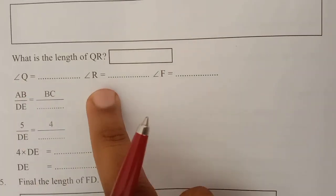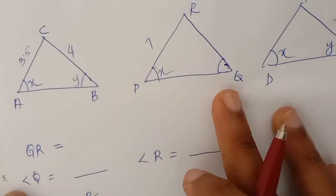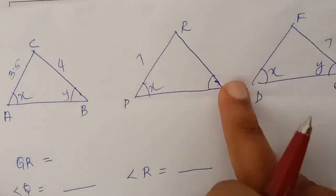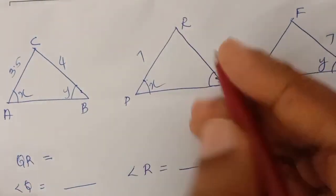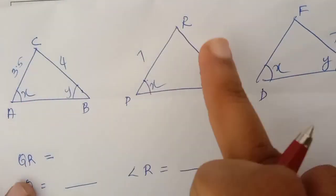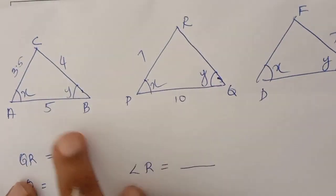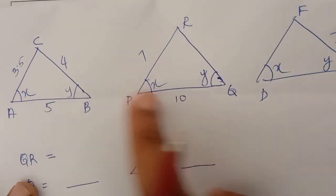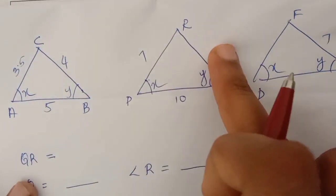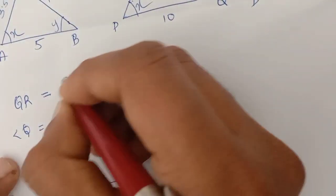What is the length of QR? Angle Q equals angle R equals angle F equals n. The ratio of the sides is equal. Here is 5, here is 10, here is 3.5, here is 7. QR is 4 into 2, which is equal to 8. So QR is equal to 8.